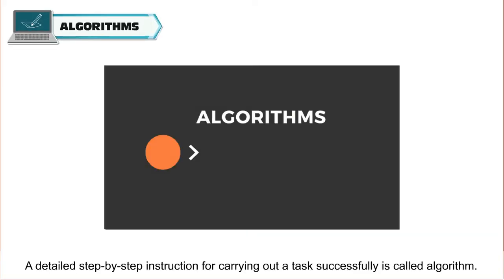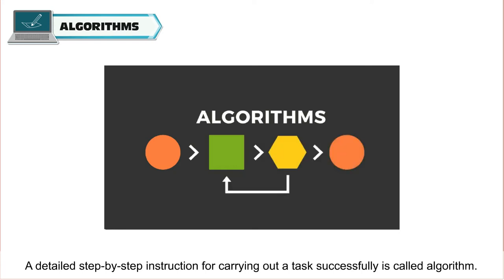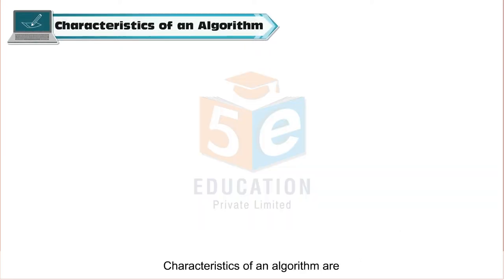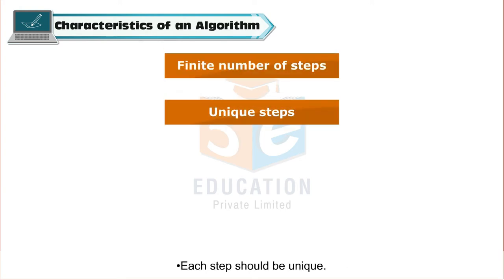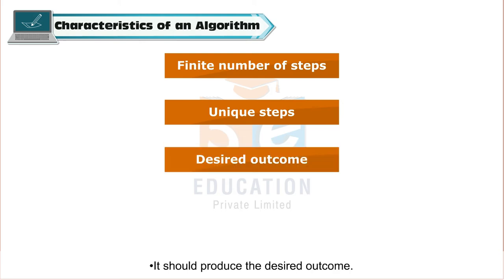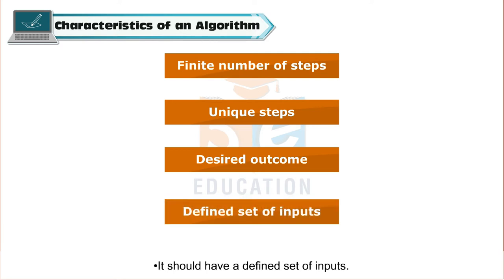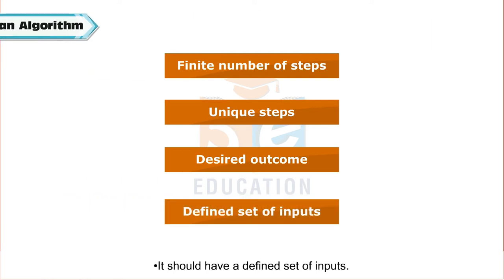A detailed step-by-step instruction for carrying out a task successfully is called an algorithm. Characteristics of an algorithm are: it should have a finite number of steps, each step should be unique, it should produce the desired outcome, and it should have a defined set of inputs.